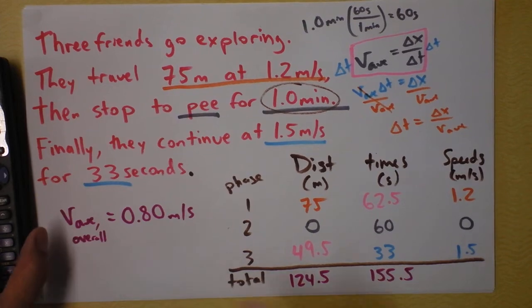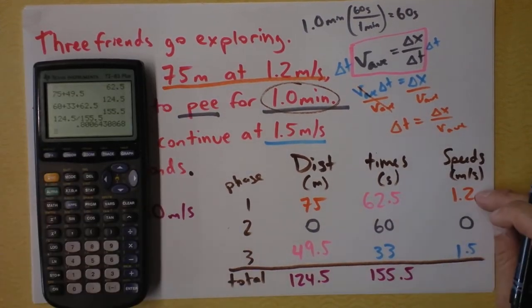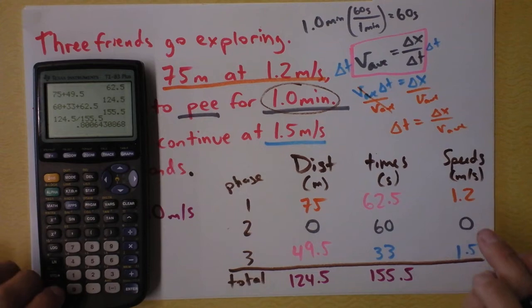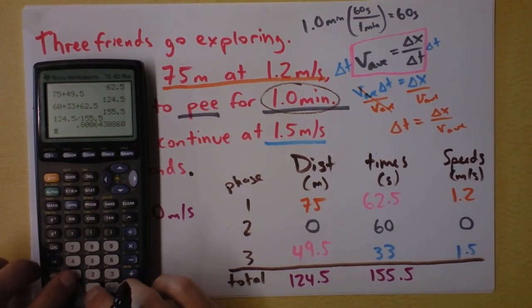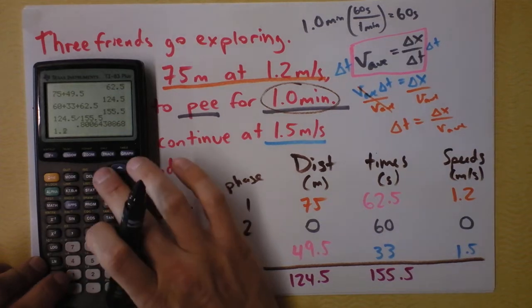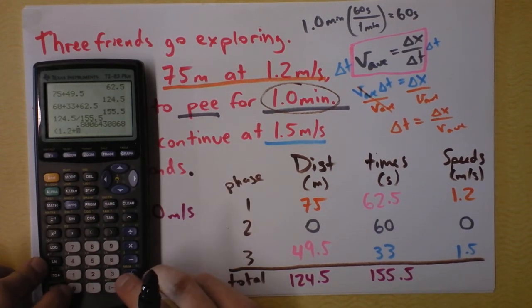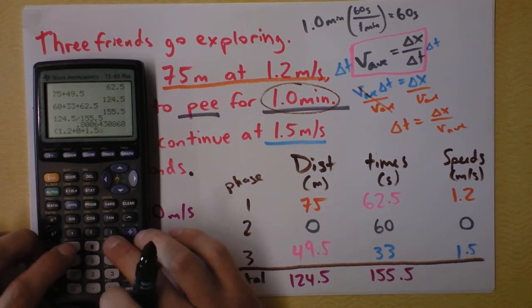Which is very interesting because if I simply add up these three speeds and divide by three, I will not find the same average. Let's try that. 1.2, let's open some parentheses, right? Go crazy. 1.2 plus 0 plus 1.5. I did that just for you. I added that zero in there just for you.